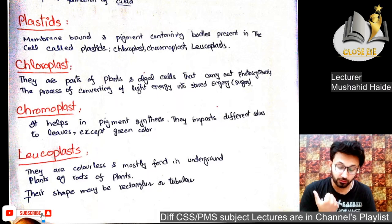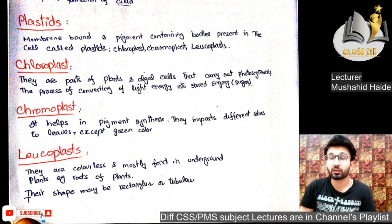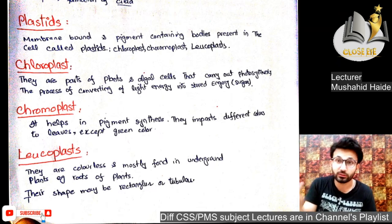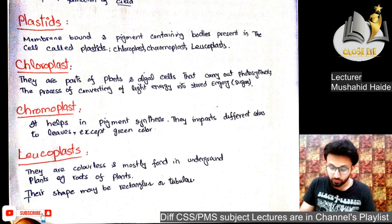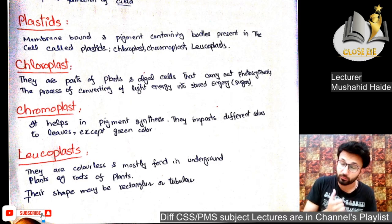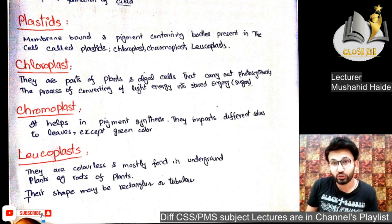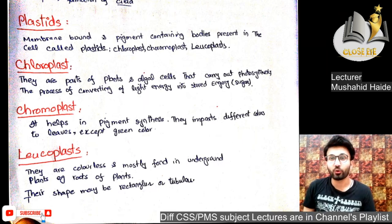Plastids are present in three categories: chromoplasts, chloroplasts, and leucoplasts. Chloroplasts are involved in photosynthesis — they convert the sun's light energy into sugar. Chromoplasts contain different color pigments giving plants various colors. Leucoplasts are mostly colorless and are found in underground plant parts such as roots.